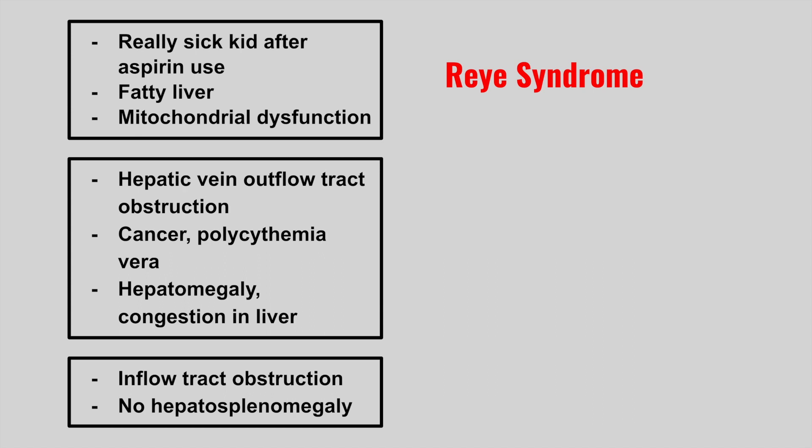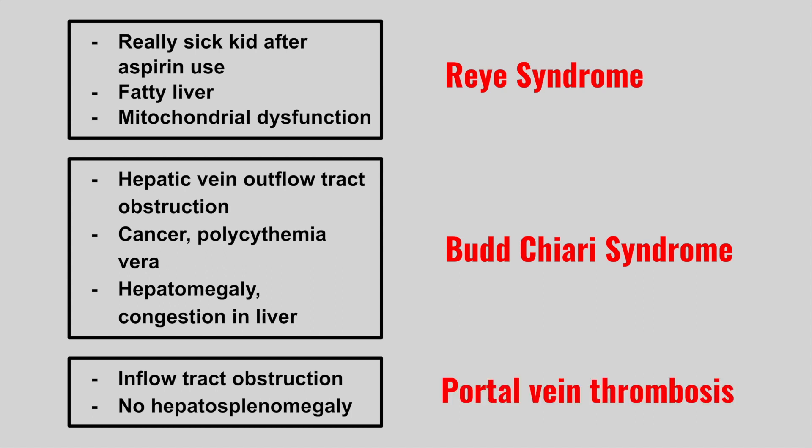The next patient has a hepatic vein outflow tract obstruction, a history of a hypercoagulable state like cancer or polycythemia vera, with hepatomegaly and congestion in the liver. This is Budd-Chiari syndrome. This is often compared to the next patient, who has an inflow tract obstruction with no hepatosplenomegaly — that is portal vein thrombosis.